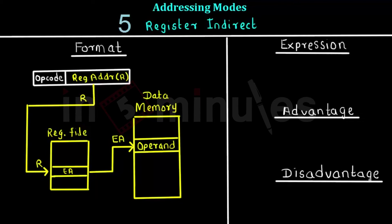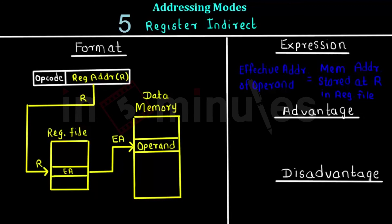Data from that register is fetched, and that data is the effective address of the operand from data memory. Finally, the operand is fetched from data memory using that address. The expression is: the effective address equals the memory address stored at register R, where R is the register address given in the operand field.